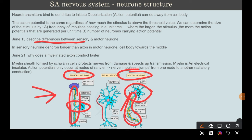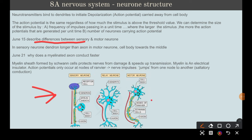Second, it asks why a myelinated axon conducts faster — a very common and important question. Myelin sheath is formed by Schwann cells, protects nerves from damage, and speeds up transmission because it's an electrical insulator. Action potentials can only occur at the nodes of Ranvier — the little gaps — so the nerve impulse jumps from one node to the other, making it quicker.